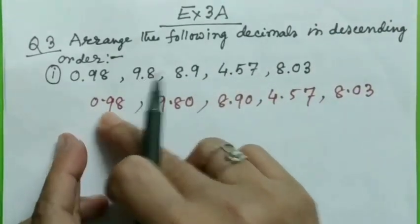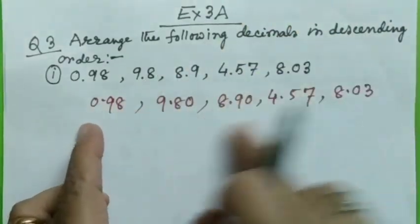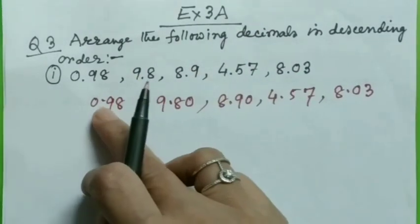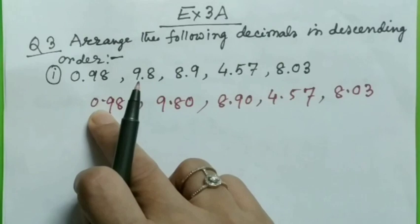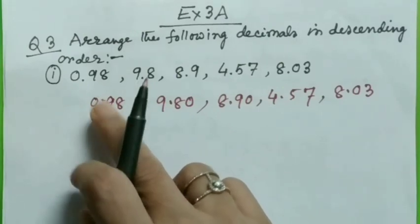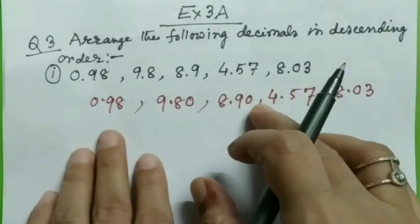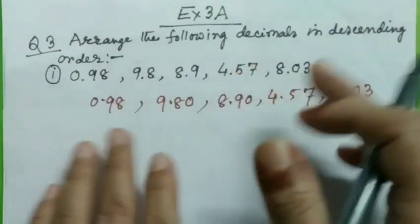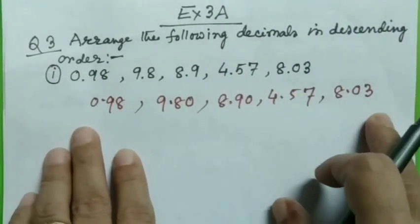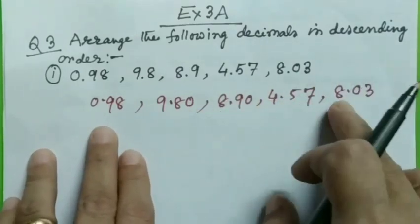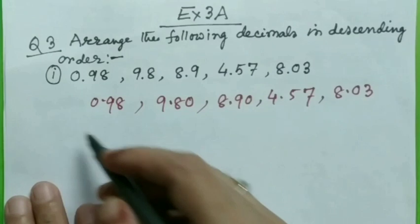So now, first we will compare whole number parts if there is any. Because here you see, no whole number is there. We will take it, we will think it as 0 as there is no whole number given. So this is 0, this is 9, 8 like this. So we will compare whole number parts and then we will compare tens place, hundreds place like this.